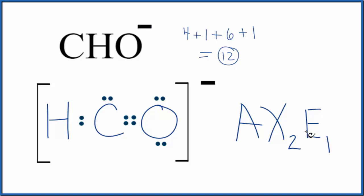This is Dr. B with the Lewis structure and molecular geometry and bond angles for CHO minus. Thanks for watching.